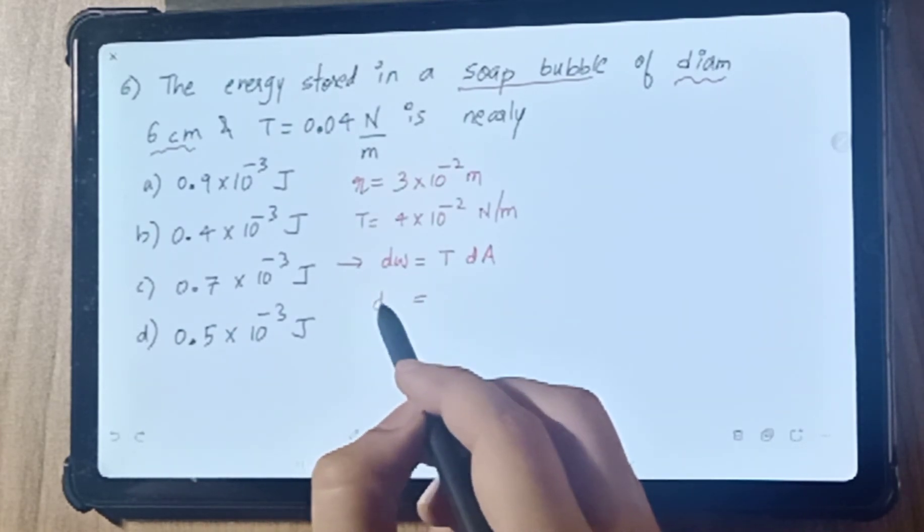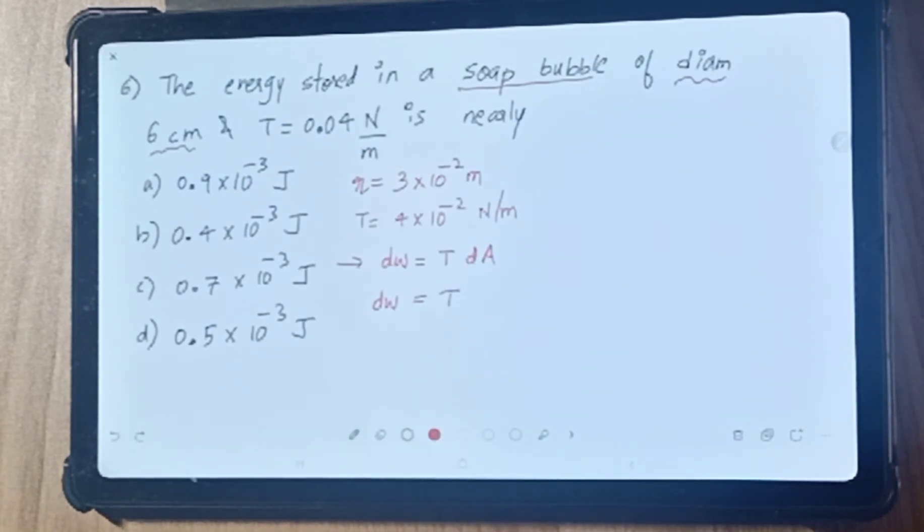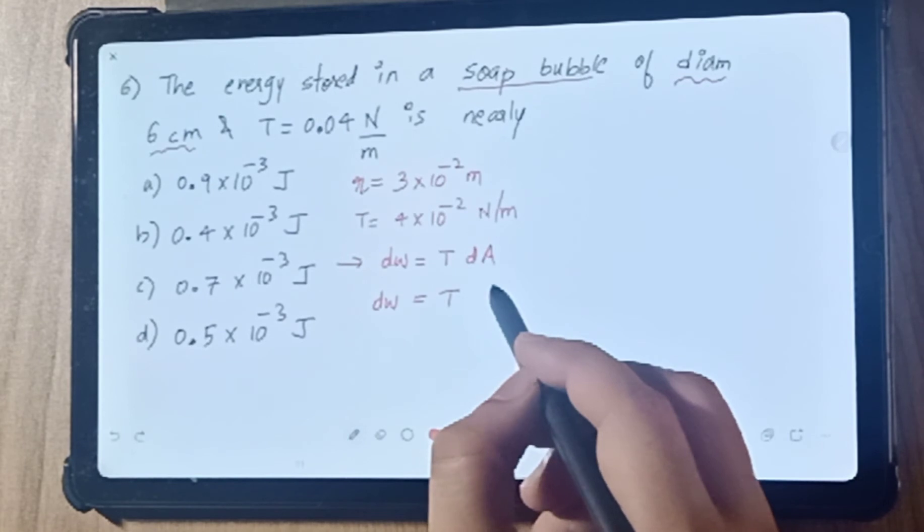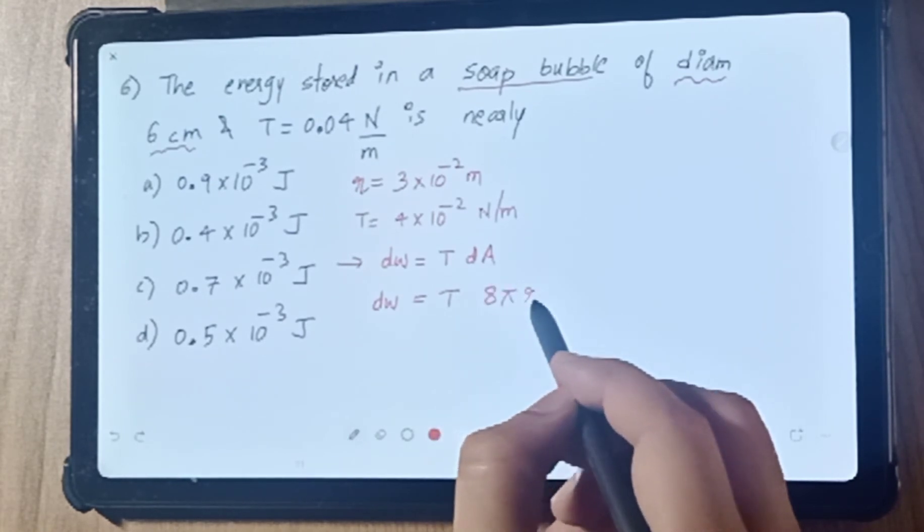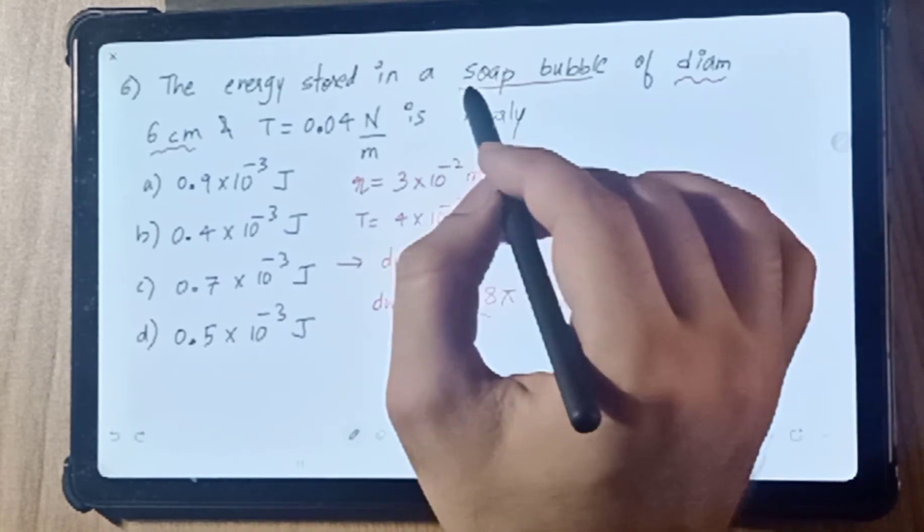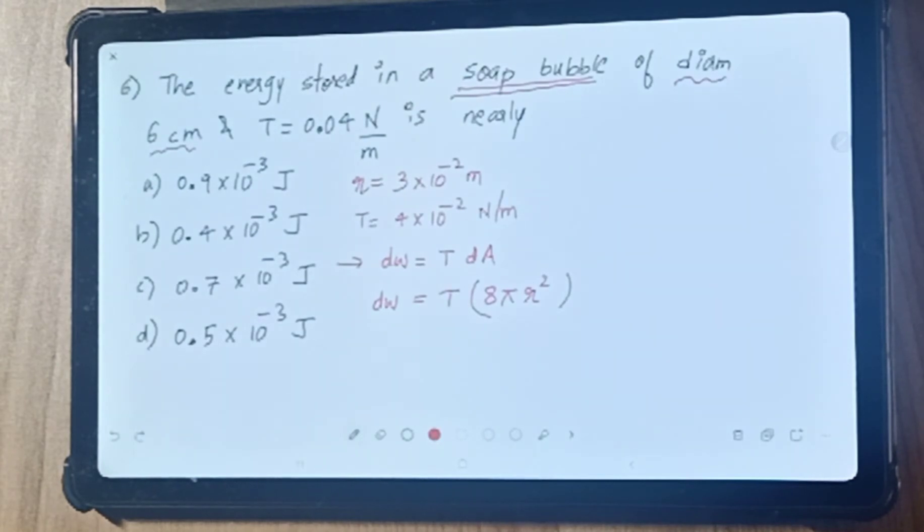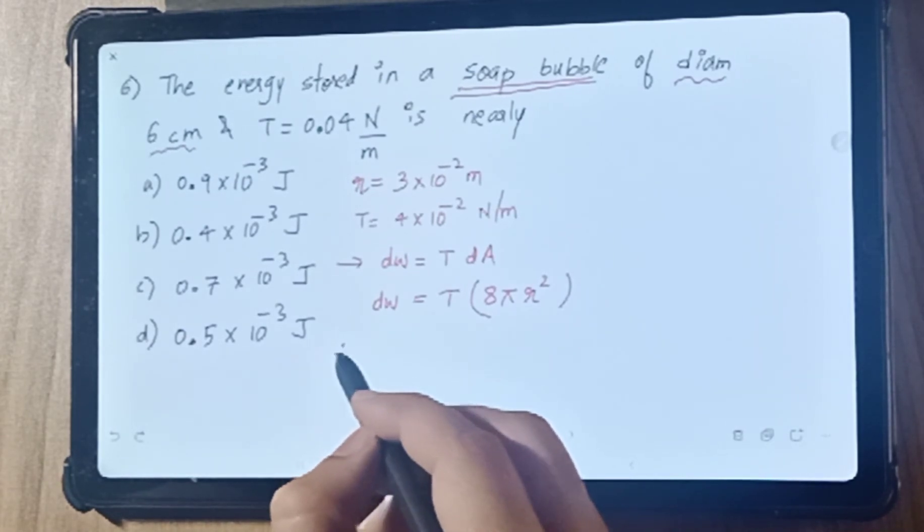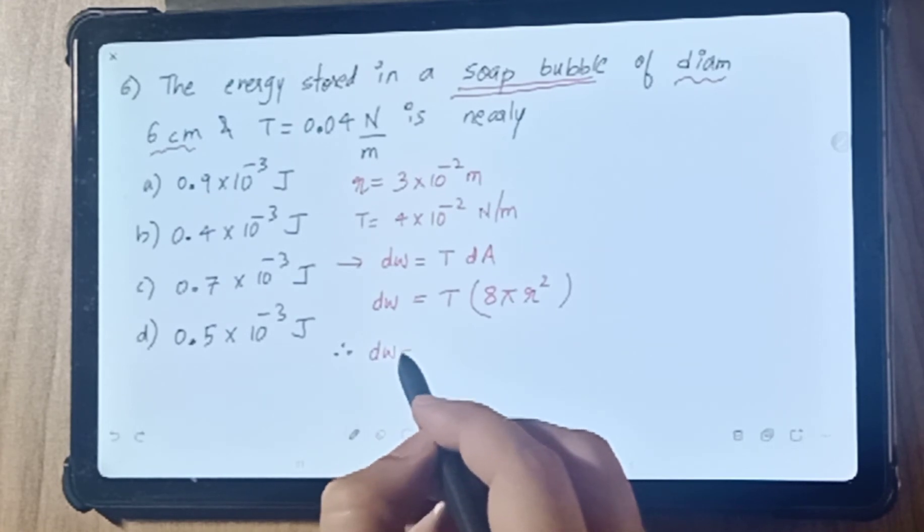Students, that means DW = T × DA. Now students, what do you think we should consider for DA here: 4πr² or 8πr²? 8πr², yes students. Since it's a bubble, it has 2 free surfaces, so surface area is double of 4πr², that is 8πr².